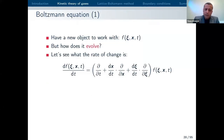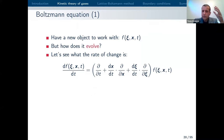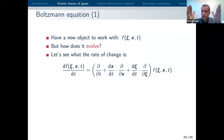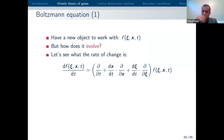Now the question is: if you have this probability distribution function, then as a physicist you would immediately ask how does it evolve? You cannot just have a dynamic quantity without asking about its dynamics. What we can do is take the total time derivative to see how it changes.